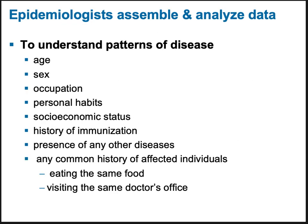Epidemiologists gather lots of data to analyze patterns of disease — including age, sex, occupations, personal habits, socioeconomic status, history of immunization, presence of other diseases, food they eat, and any commonalities between outbreak cases, like whether they went to the same place at the same time. This helps identify the source of the outbreak and understand patterns of disease.